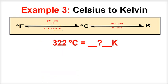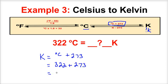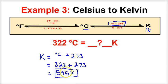In this example, we know the degrees Celsius and we're trying to find the Kelvin temperature. To go from degrees Celsius to Kelvin, we use the formula: Kelvin equals degrees Celsius plus 273. Our degrees Celsius is 322, so we add 273, and we end up with 595 K. So 322 degrees Celsius is the same thing as 595 K.